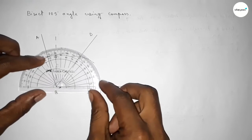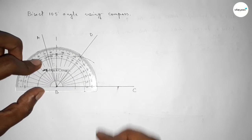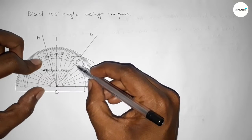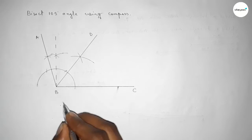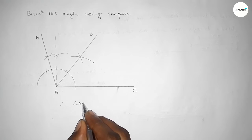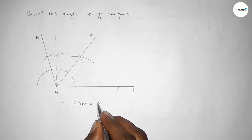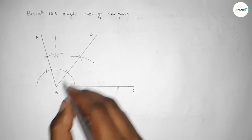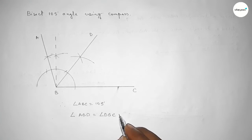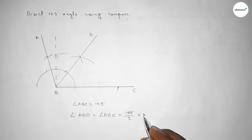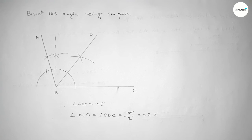Checking the angles — this is approximately 52.5 degrees. Therefore, angle ABD equals 105 degrees, and angle ABD equals angle DBC equals 105 divided by 2, which is 52.5 degrees each. That's all, thanks for watching. If this video is helpful to you, please like and subscribe.